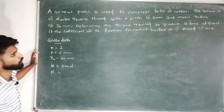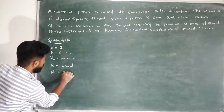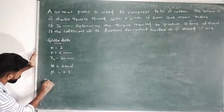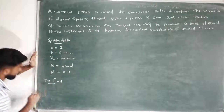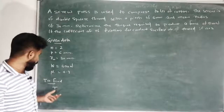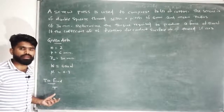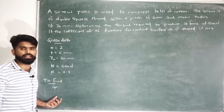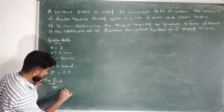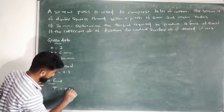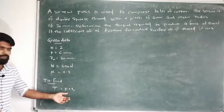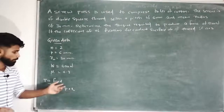Coefficient of friction mu is equal to 0.3. What is to find out? To find T, torque. Torque is equal to F1 times R. We have mean radius R_m. Torque equals the effort times the mean radius.